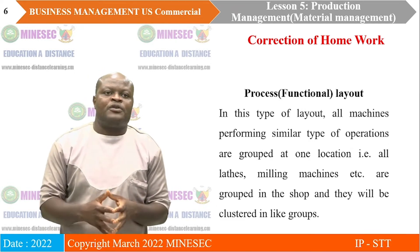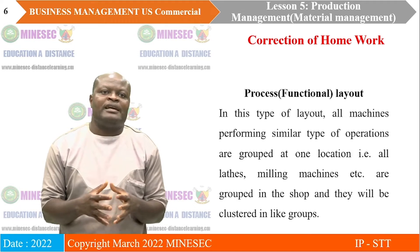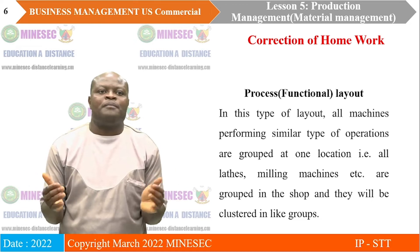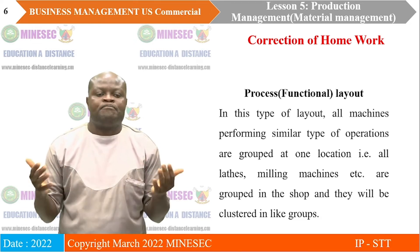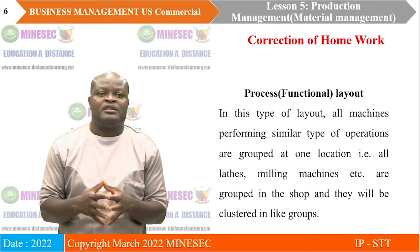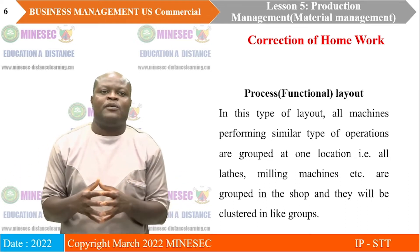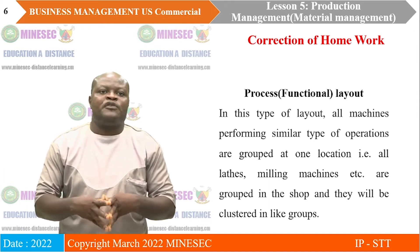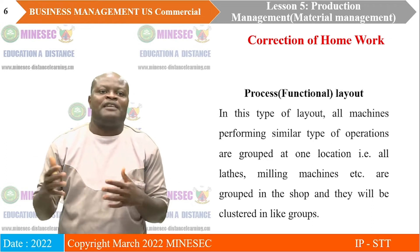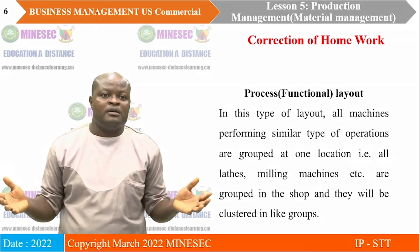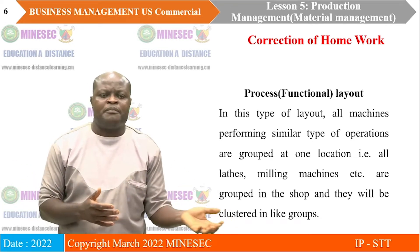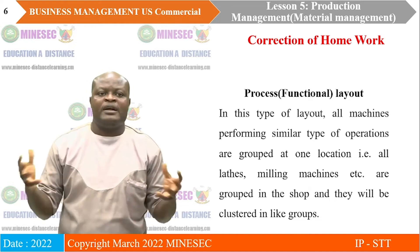The next type of layout is the process or functional layout. It is a type of layout where all the machines are grouped in one position and are used for dissimilar or various types of operations. It is not for a specific product like the line layout, but is used in function of a particular process. Because it can handle diversified products — like a mill machine that can be used to grind maize, cassava, corn, or other items.